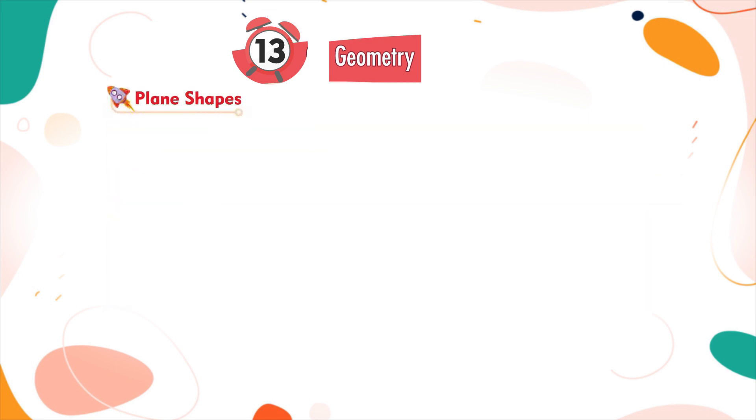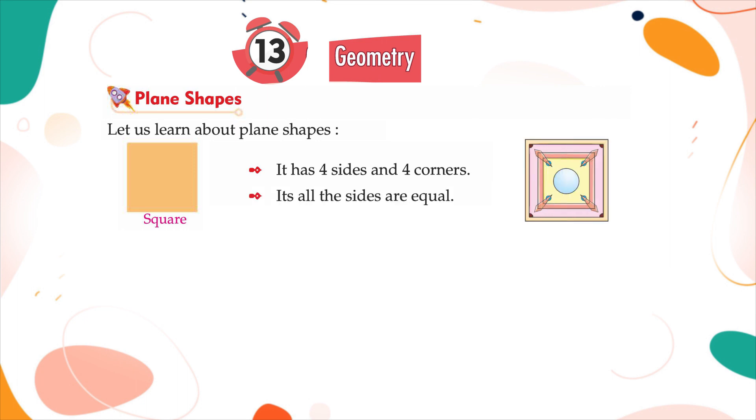Plane Shapes. Let us learn about plane shapes. Square: It has four sides and four corners. All its sides are equal.